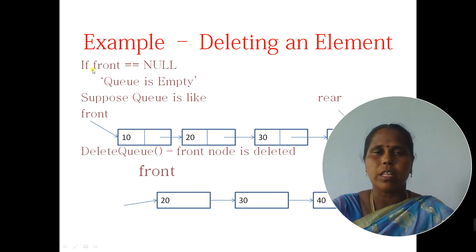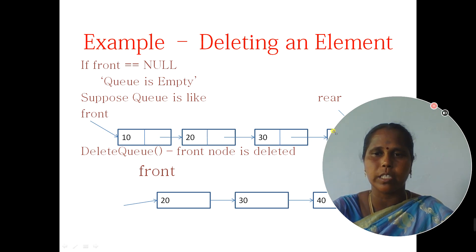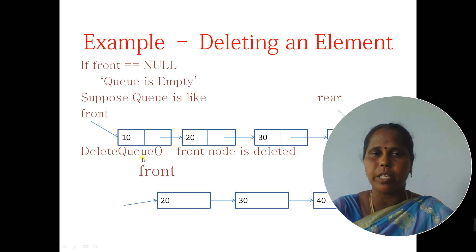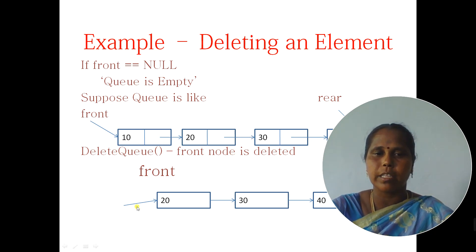Example for deletion: suppose front is equal to null, then the queue is empty. Suppose the list has the elements 10, 20, 30, and 40. I am asking to delete an element from the queue. The node at the front pointer will be removed from the list. After removing this node, the front will point to the next node in the list. So after deletion, the list has 20, 30, 40, where 20 is the front node and 40 is the rear node.